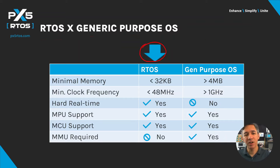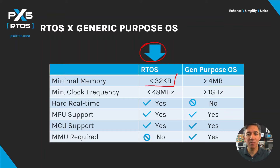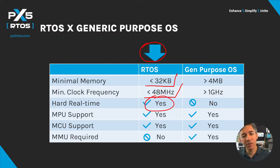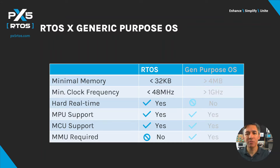In sharp contrast, an RTOS is capable of operating in memory-constrained environments — in some cases less than 32K of memory — and can efficiently run on microcontrollers running at less than 48 megahertz. Perhaps even more important, RTOS is designed to meet real-time requirements, typically in the microseconds arena. The inability to meet real-time requirements pretty much rules out GPOS from the scenarios I'll be showing next.